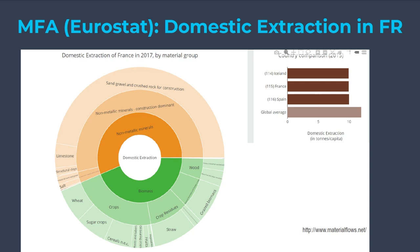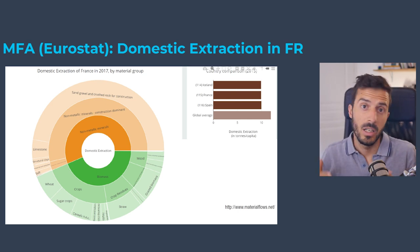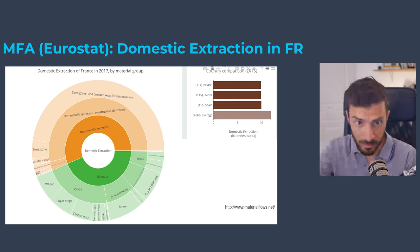Zooming into the latest data for 2017, most extraction is biomass and non-metallic minerals. Within non-metallic minerals, most is sand, gravel, and crushed rock, with some limestone and clay. Within biomass, there is a lot of wheat, sugar crops, and cereals, and then grazed biomass and straw — mainly to feed cattle rather than humans. So zooming in gives you an idea of the precise use: sand mostly for construction, straw mainly for feeding cattle.